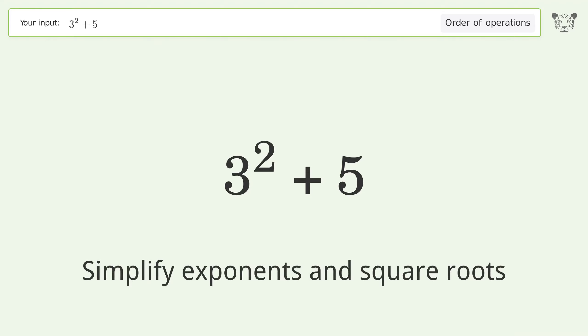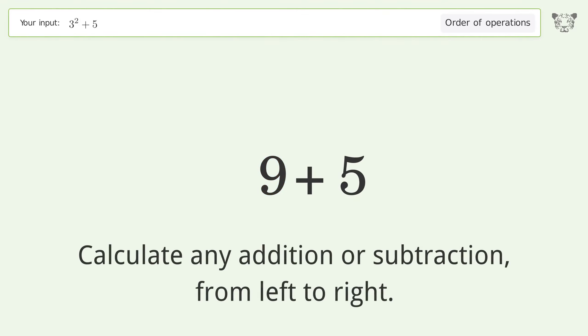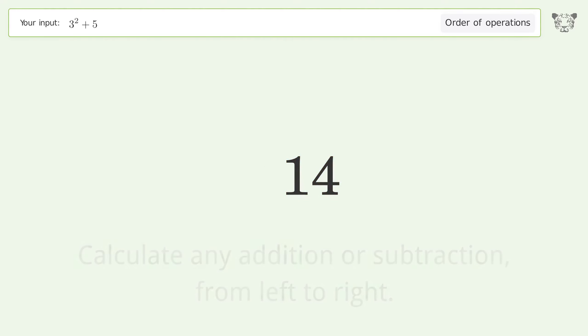First, simplify exponents and square roots: 3 to the power of 2 equals 9. Then calculate addition from left to right: 9 plus 5 equals 14. So the final result is 14.